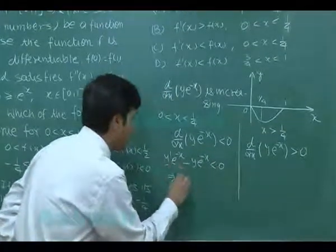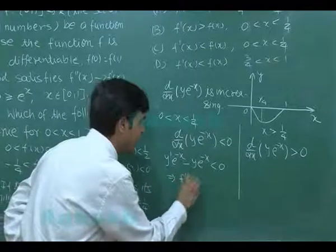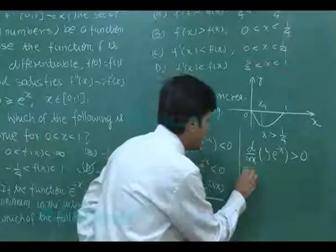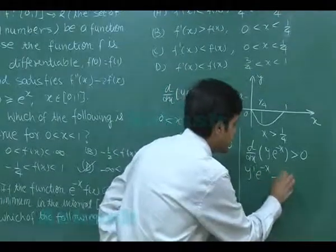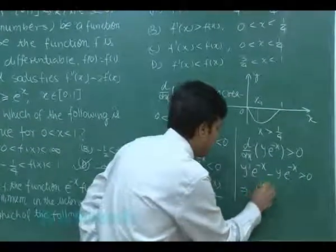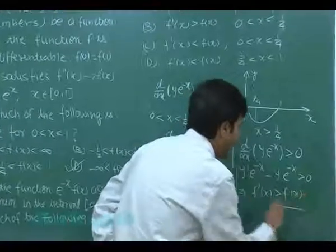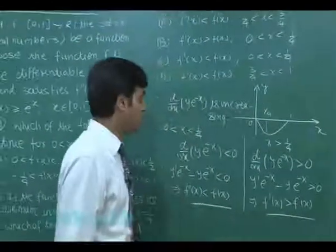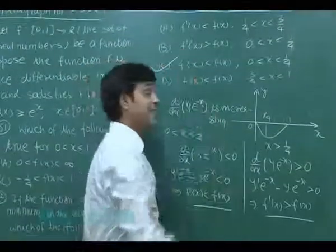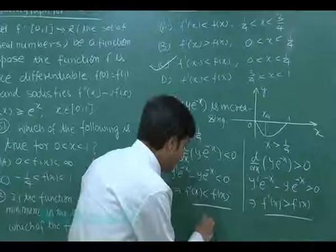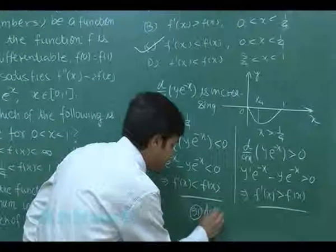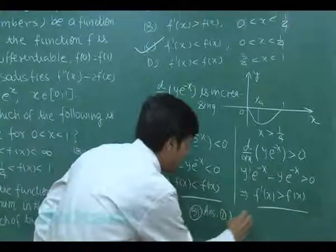Expanding d/dx[f(x)e^(-x)] = f'(x)e^(-x) - f(x)e^(-x) < 0 gives f'(x) < f(x) for x in (0, 1/4). Similarly, for x > 1/4, d/dx[f(x)e^(-x)] > 0, giving f'(x) > f(x). Therefore, f'(x) < f(x) for x in (0, 1/4) is the correct answer. For question 51 the answer is D, and for question 52 the answer is C.